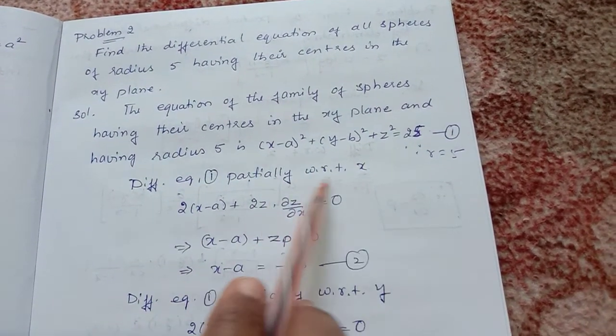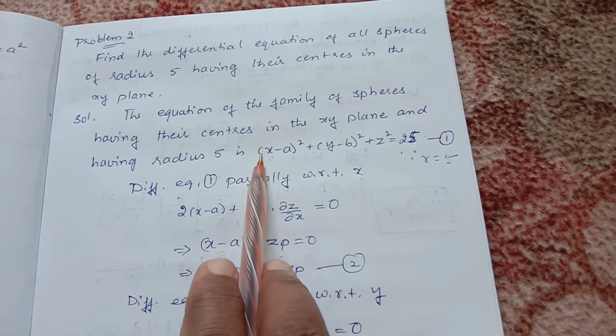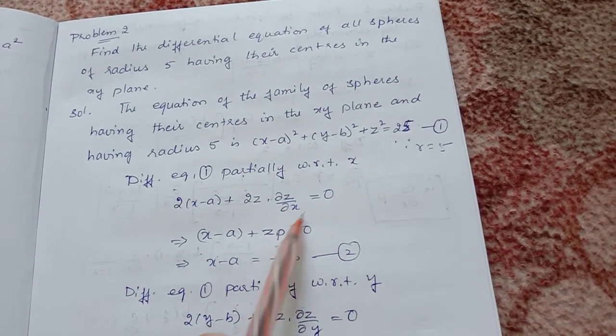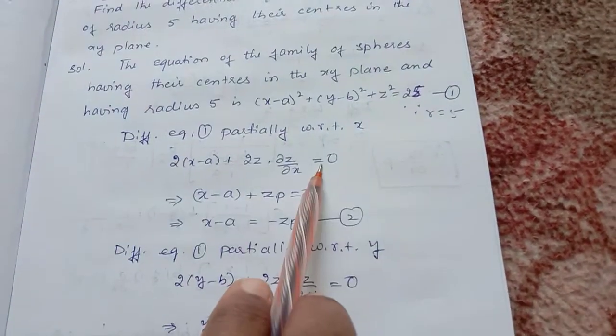Differentiating equation 1 partially with respect to x, we get 2(x - a) + 2z(∂z/∂x) = 0, since the derivative of constant is 0.